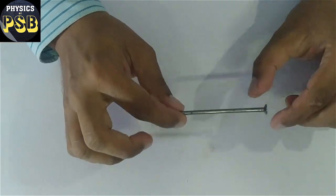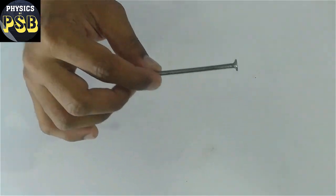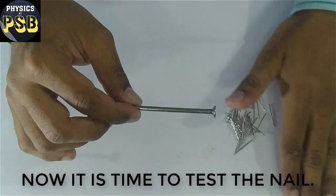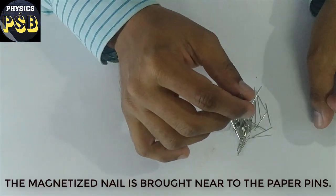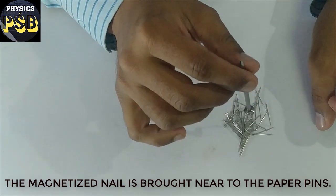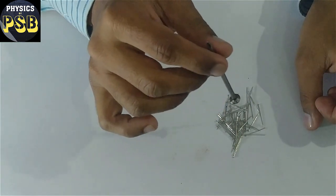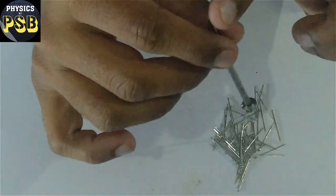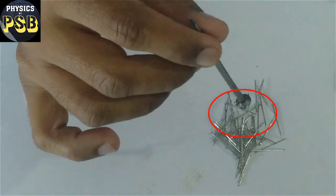For that I bring these paper pins. Now I test this. As you can see, a few pins have got attracted towards the iron nail, which has turned into a magnet.